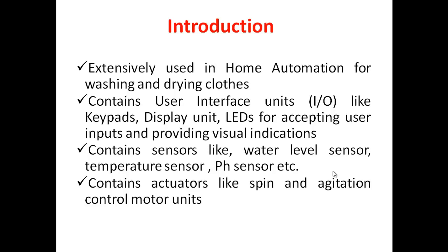It should also contain sensors. When you look into a washing machine, there are mainly three sensors used. One is a water level sensor. This water level sensor is to identify the level of water, because for all conditions the water filling inside your tank is not the same. Depending upon the cloth and the material of the cloth, we try to change the water level.